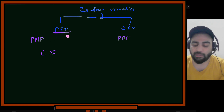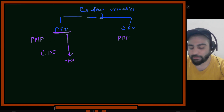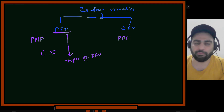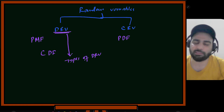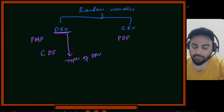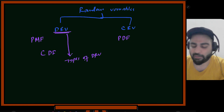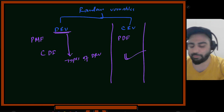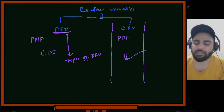We also saw different types of discrete random variables: Bernoulli, geometric, binomial, and uniform. There are other types as well, which we'll look at on demand and tackle separately.